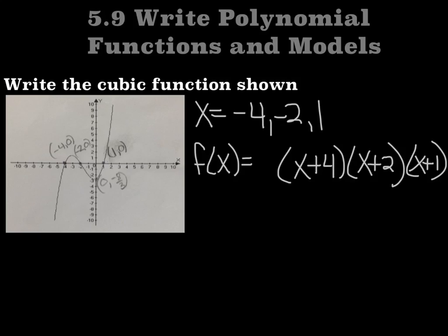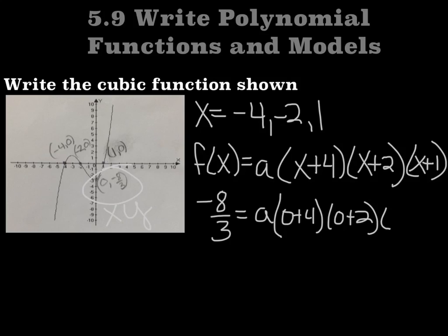If we were just doing any generic cubic function with those zeros, this would be enough. But we could have an a value here in front that would stretch it or shrink it, and so we need to figure out what that a value is. The way you can do that is to use another point that you see on the graph, right here, and plug it in for x and y. For y I'm going to put negative 8/3 equals a times, and then for x I'm going to put 0, 0 plus 4, 0 plus 2, and 0 minus 1. It should be minus 1. Sorry about that.